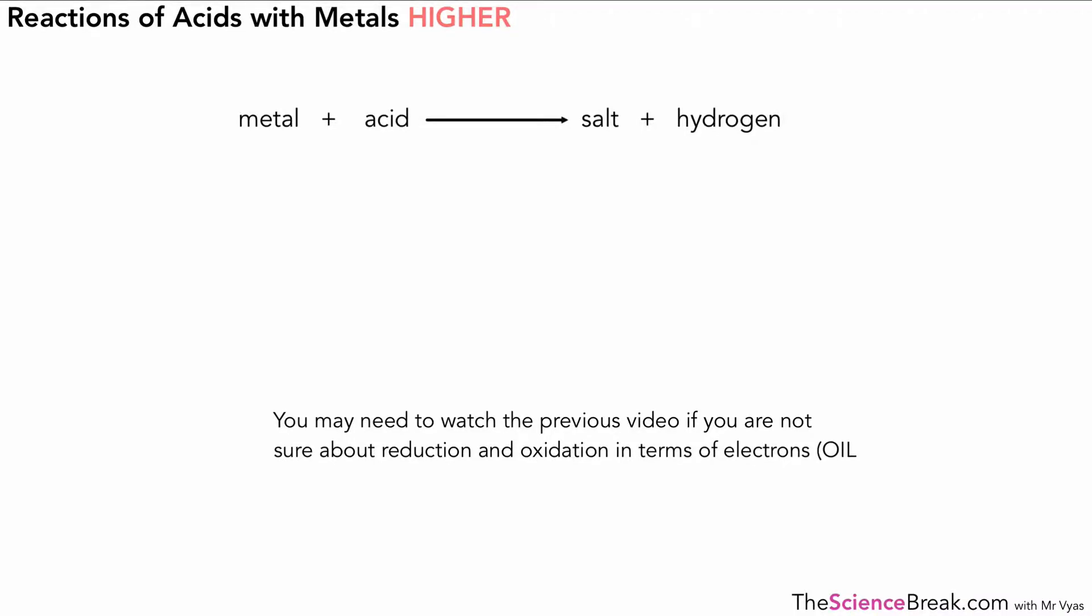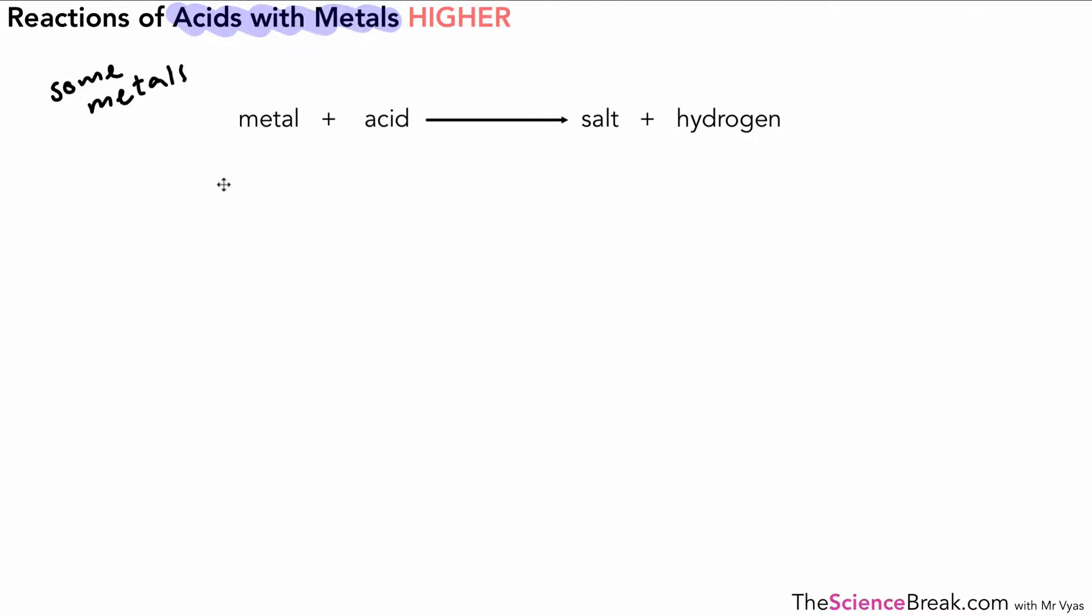Hello, today we're looking at the reaction of acids with metals for the higher tier. We've got a general equation here: metal plus acid. We must remember it's not all metals—some metals like gold won't react—but some metals plus acid will give us something called a salt and hydrogen gas.